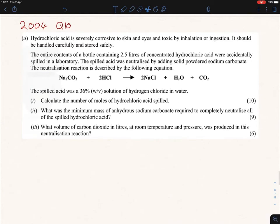Hello everybody, so today we are looking at some stoichiometry. The question is question 10 from 2004. Let's get started. We're told in the question that HCl is dangerous to skin and eyes because it's so corrosive, and that the entire contents of a bottle containing 2.5 liters of concentrated HCl was spilled in a lab. The acid then was neutralized by adding sodium carbonate.